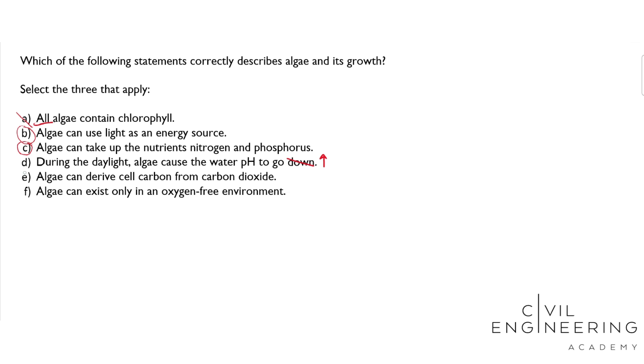So that leads us to E—that they can derive carbon from carbon dioxide. That is true. And going back to D, since they uptake carbon dioxide, that will actually increase the pH to make it more neutral, because we know that carbon dioxide has an acidification effect. So D is not right.